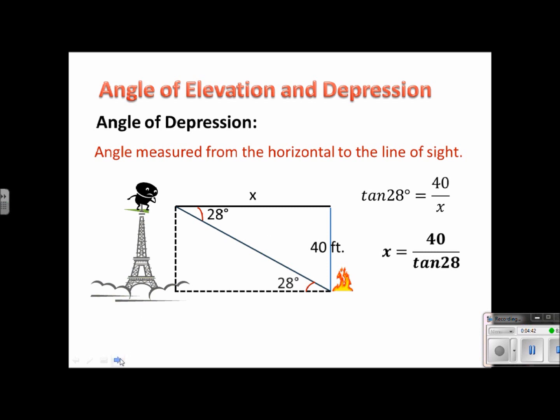So if this angle here is 28 degrees, this would also be 28 degrees here. And this would be 40 feet here. And this would be an x. What we've done is we've created two congruent triangles.